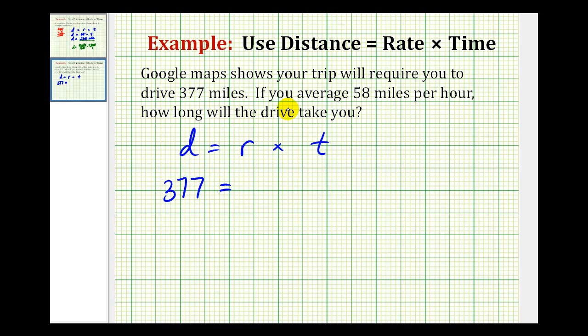And we also know that our average rate is going to be 58 miles per hour. So r would be 58 times t, or just 58t.